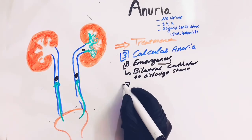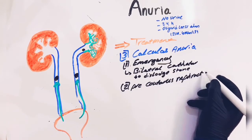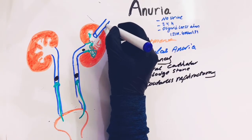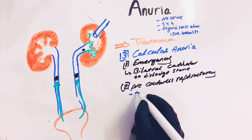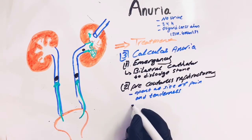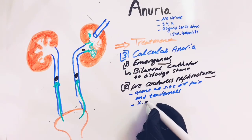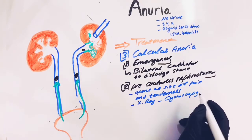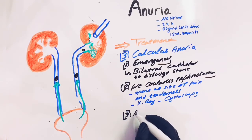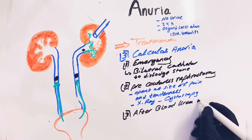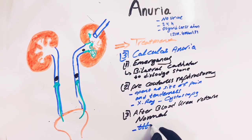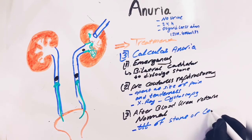Alternatively, we perform a percutaneous nephrostomy. Under ultrasound control, we introduce a nephrostomy tube inside the pelvicalyceal system at the site of pain and tenderness, or at the site of the stone shown on X-ray, or we do cystoscopy. After relief and the blood urea returns to normal, we proceed with definitive treatment for the stone.